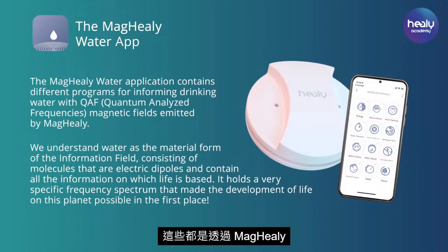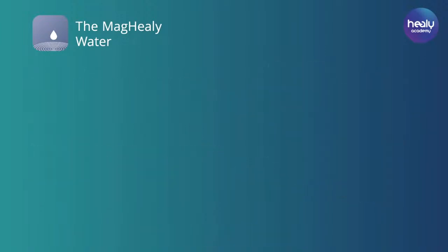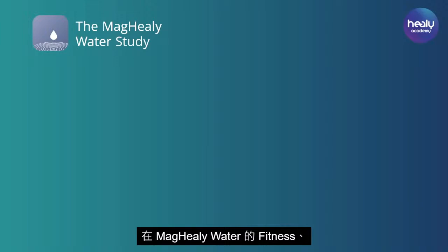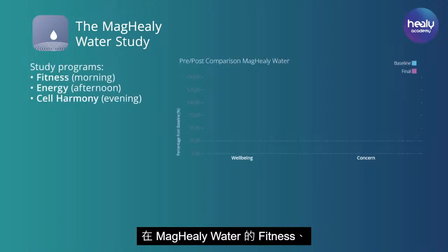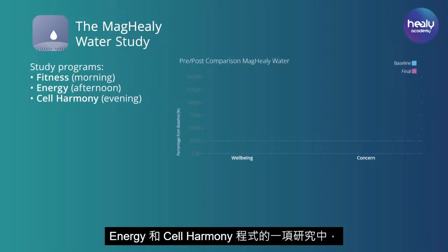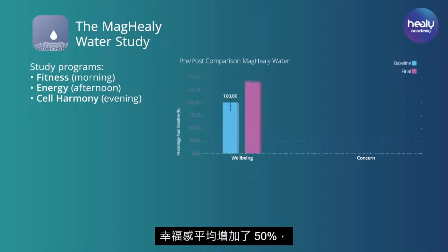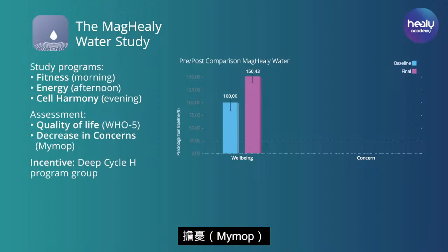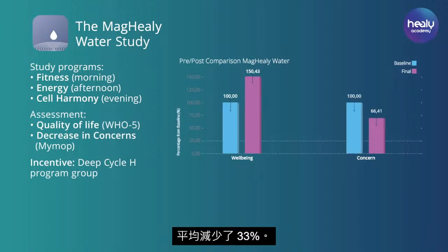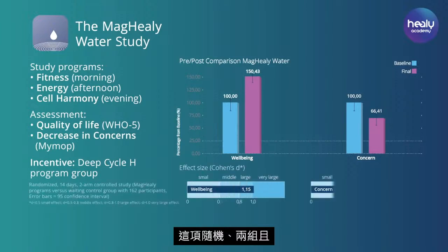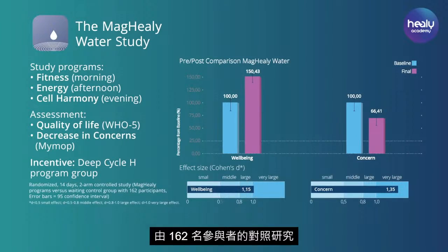In order to use the receptivity of water molecules for electromagnetic fields in everyday life, the Maghealy Water App has various programs to inform drinking water with quantum-analyzed frequencies, transmitted by applying electromagnetic fields using Maghealy. In a study of the Maghealy Water Programs Fitness, Energy, and Cell Harmony, participants had an average 50% increase in well-being on the Quality of Life Assessment WHO-5 and an average 33% decrease in concerns (MIMOP). The effect size of this randomized two-arm controlled study of 162 participants was very large for decrease in concerns.